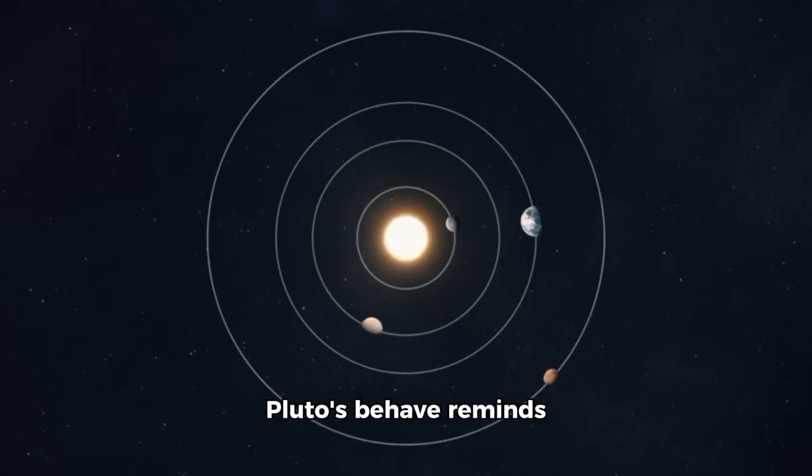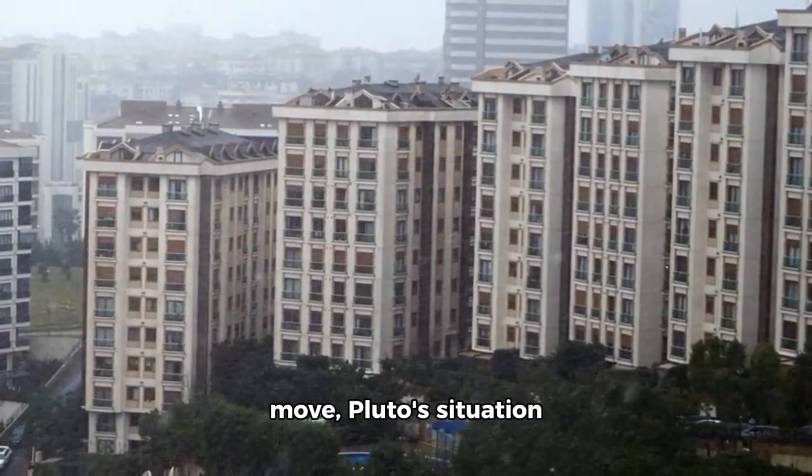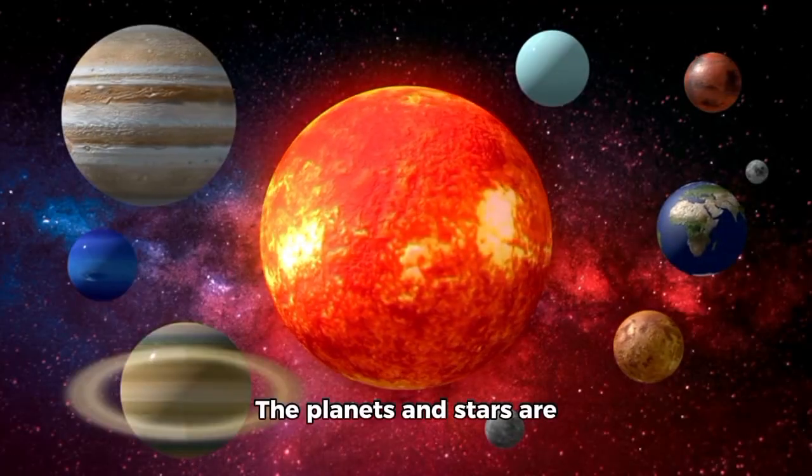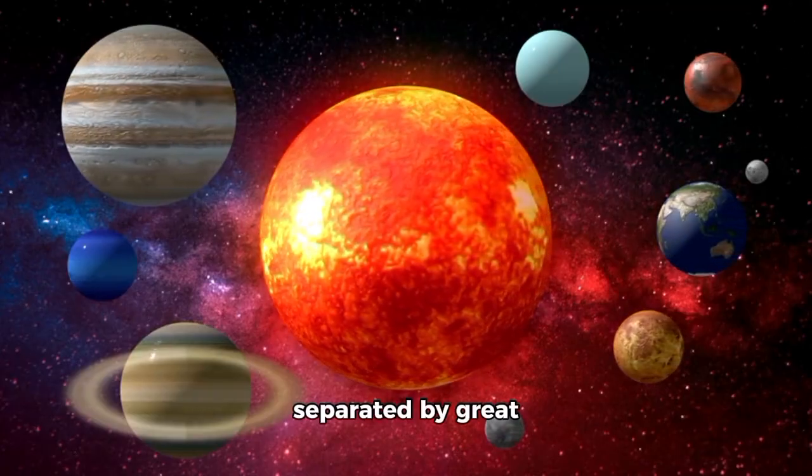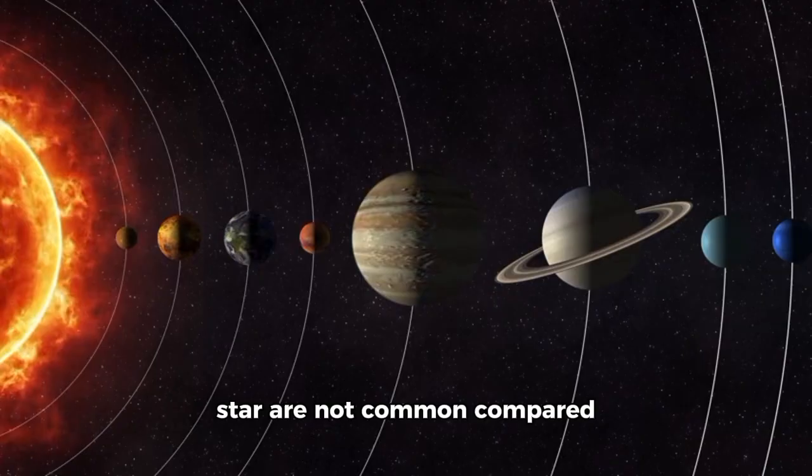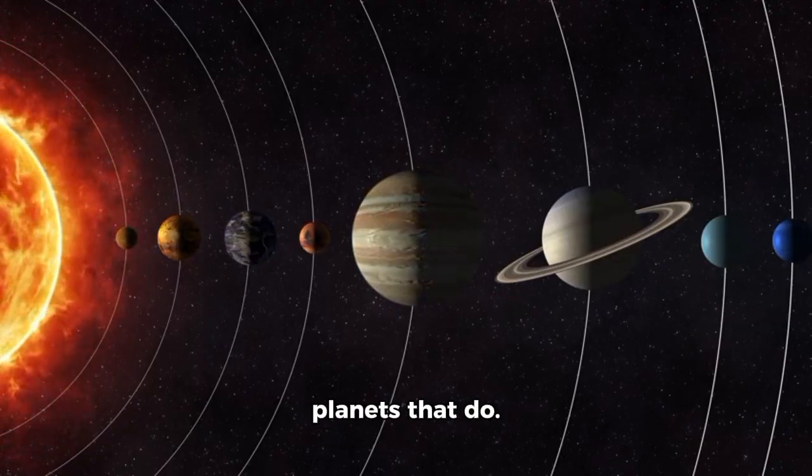The way orbits like Pluto's behave reminds us that the universe is always changing. Even though we've learned a lot about how planets move, Pluto's situation shows that there's still much we don't know. The planets and stars are separated by great distances, which means that crashes are rare. Planets that don't orbit any star are not common compared to the number of stars and planets that do. Crashes are not likely.